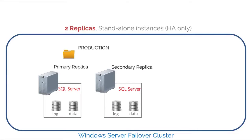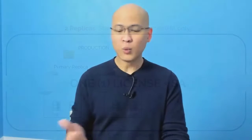Let's look at the design pattern where you have two replicas — both standalone instances — and you only want to accomplish high availability. As far as the previous licensing agreement and software assurance benefits are concerned, there really isn't much of a big deal here. It's exactly the same: you only need one license to cover the primary replica, plus software assurance to cover the secondary replica.